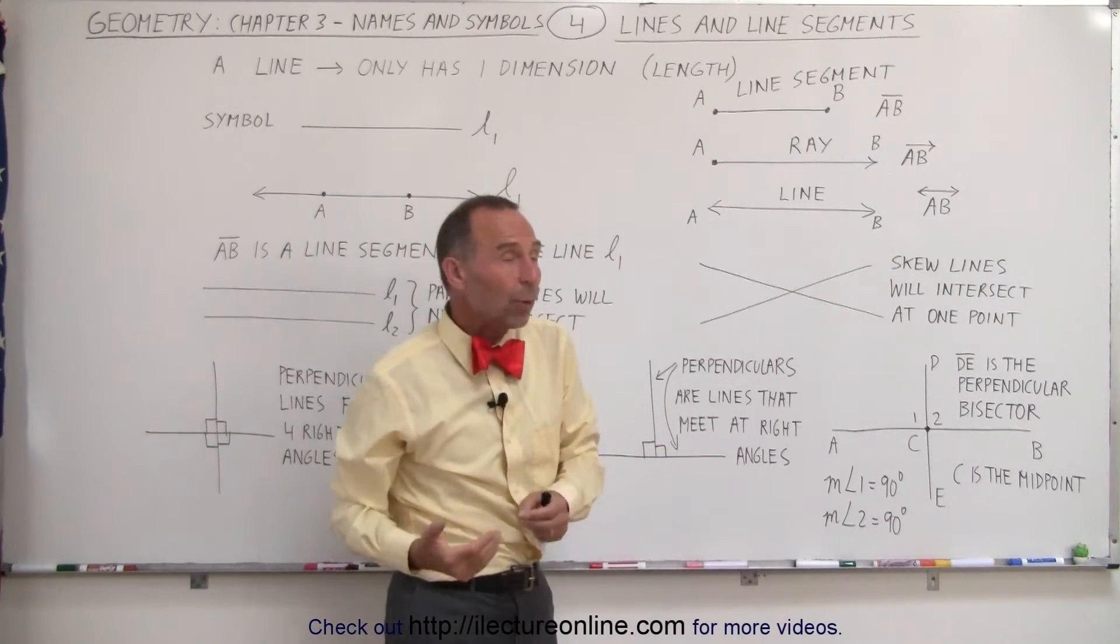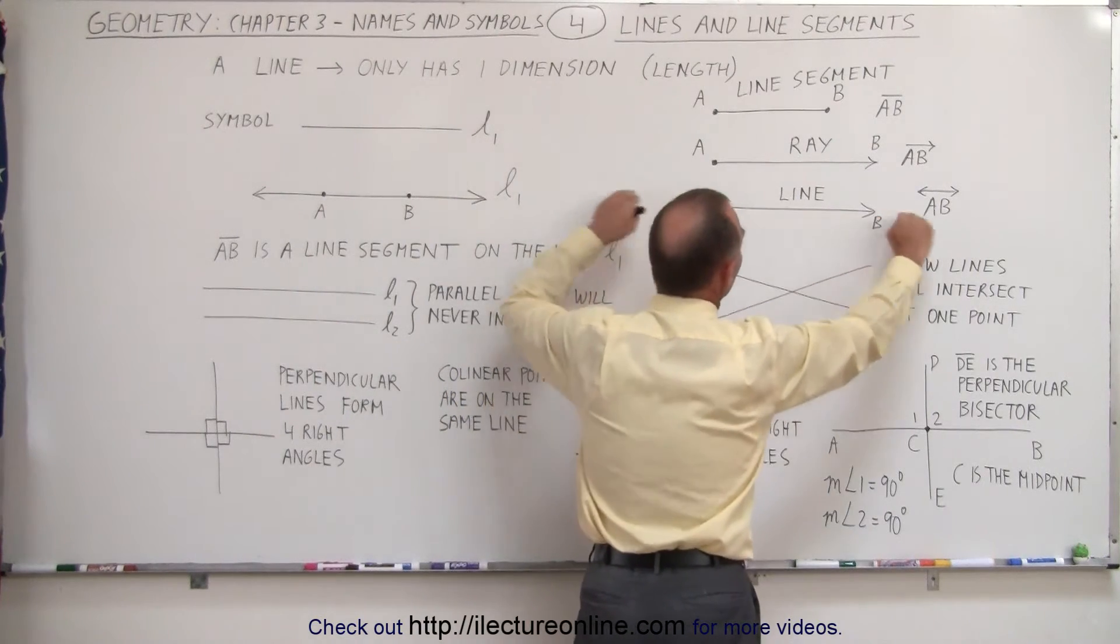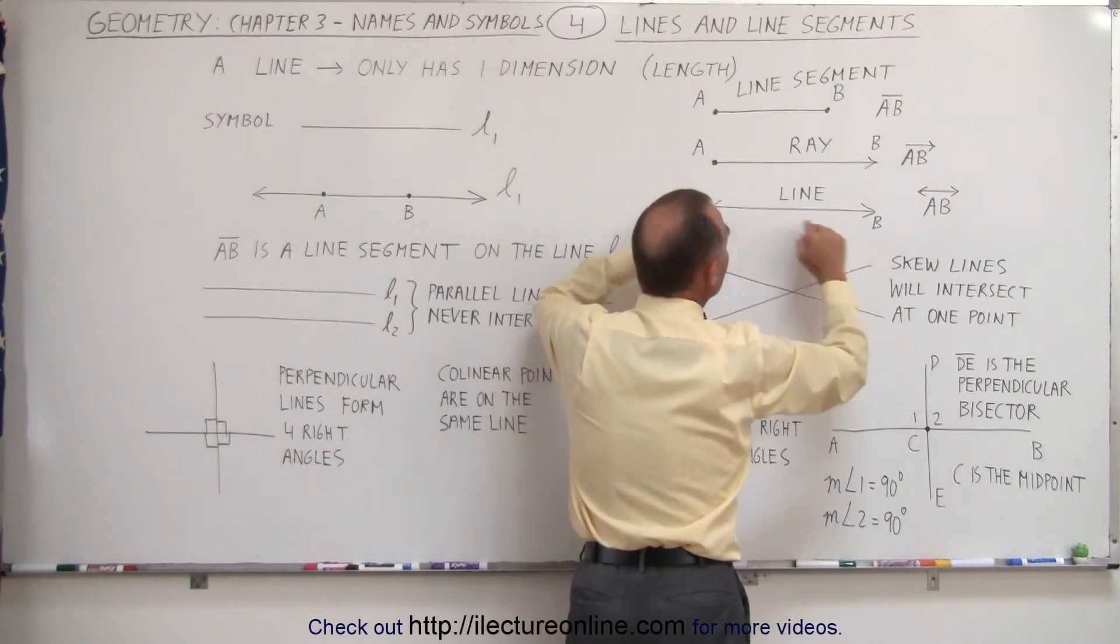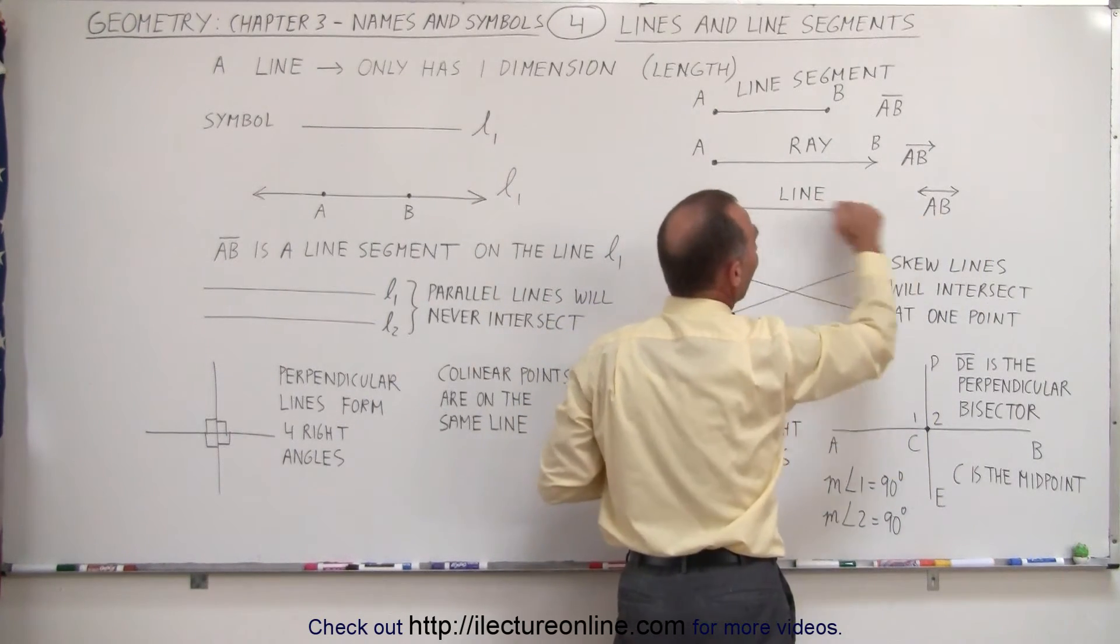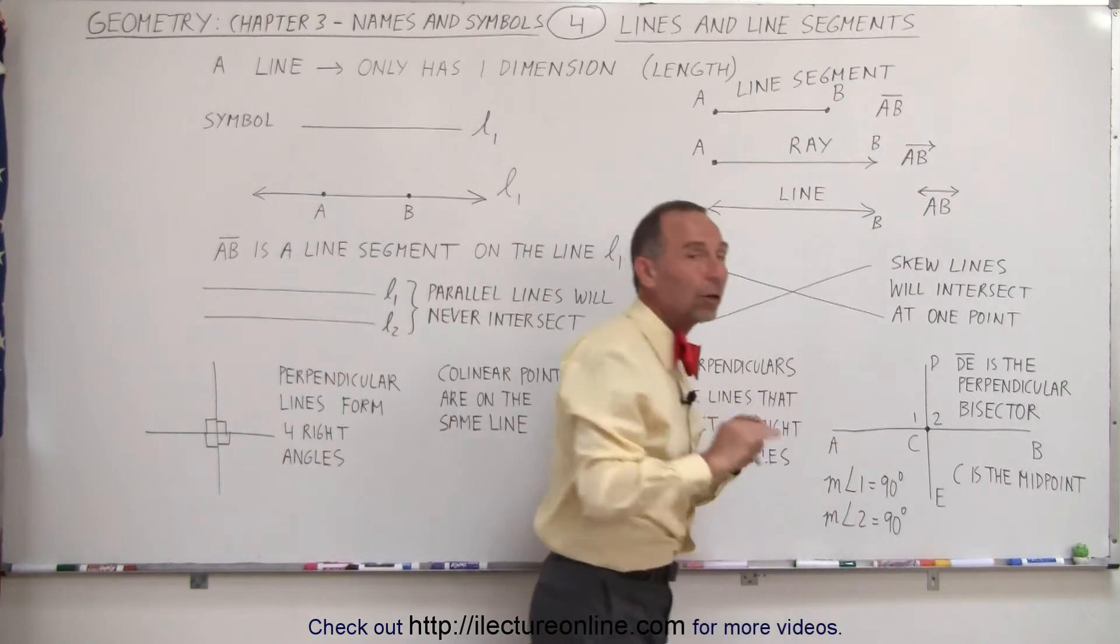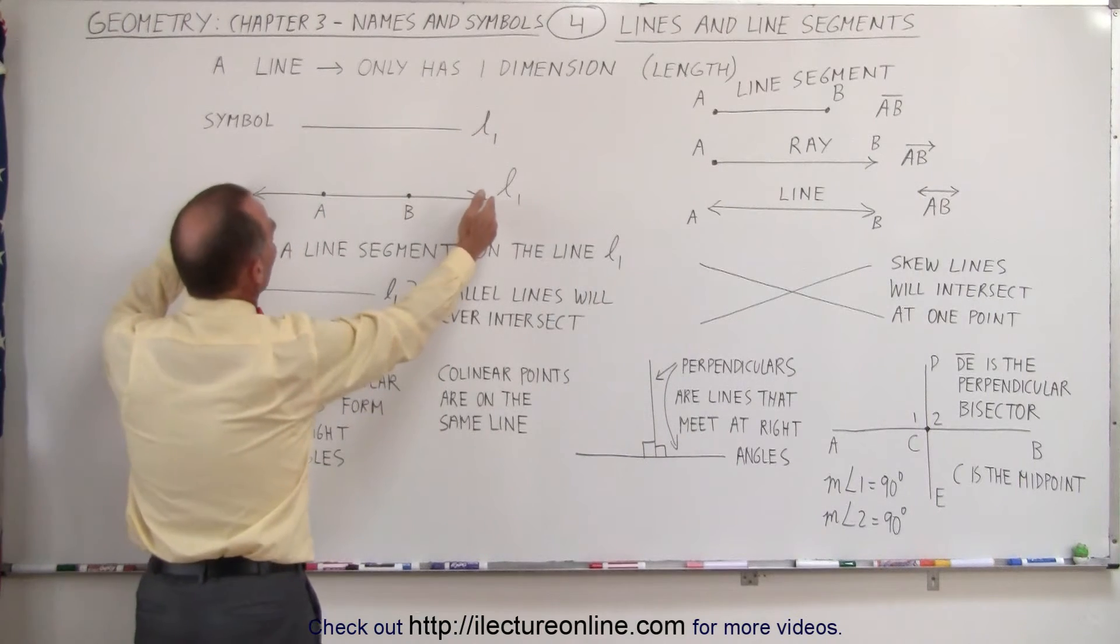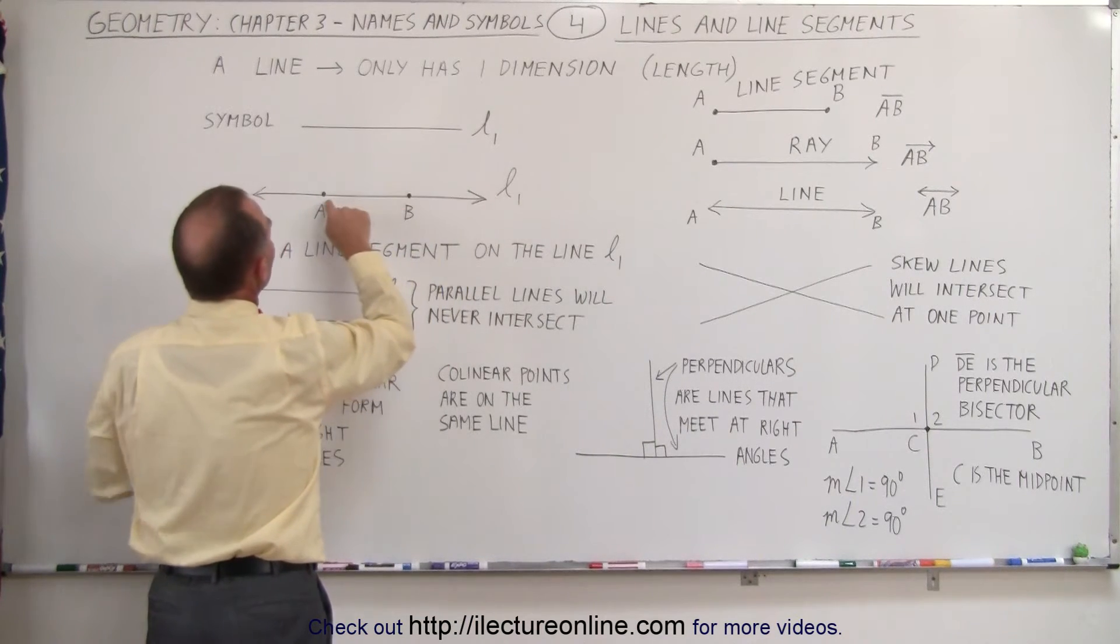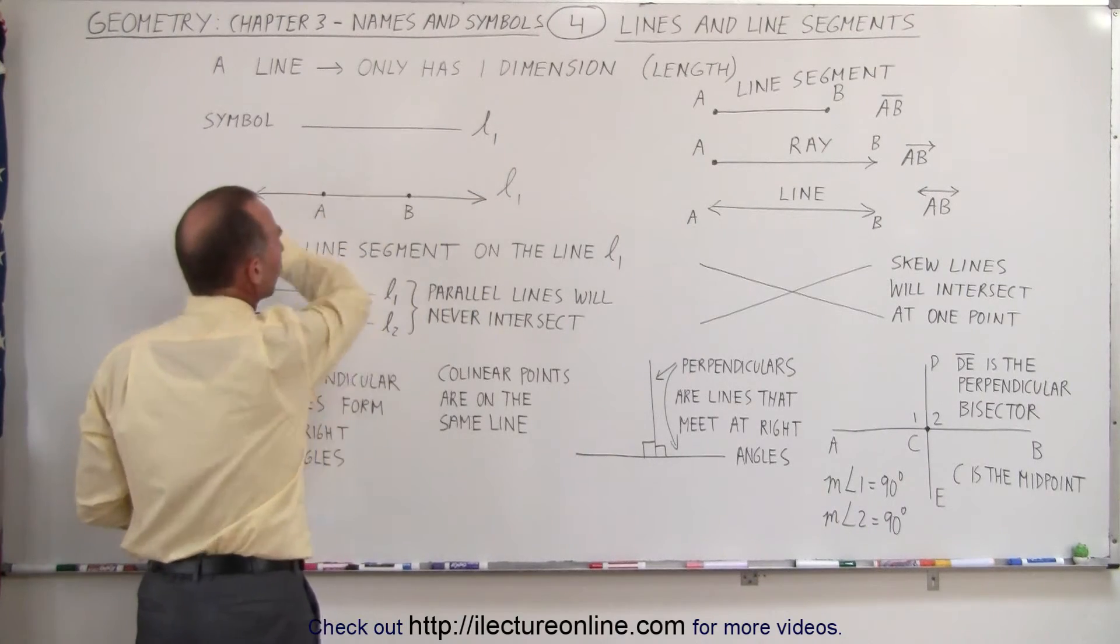And then finally, when we want to have a symbol for a line, we then indicate with the little arrows here that it goes on forever, from A to B and beyond in both directions. So we put AB down because that defines the location and direction of the line, but the little arrows indicate that it goes on forever in both directions. So this would be the preferred way to write the line. It goes through point A, it goes through point B, and it goes on forever in both directions.